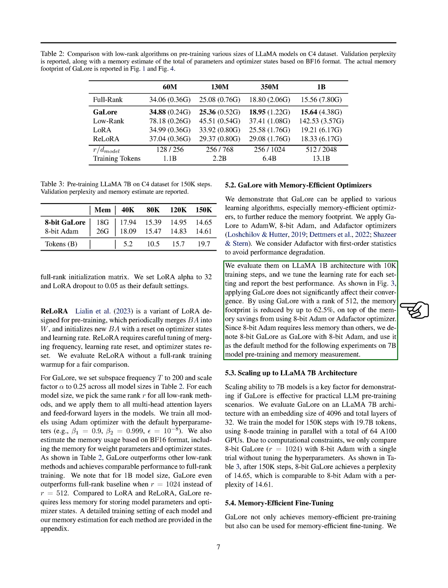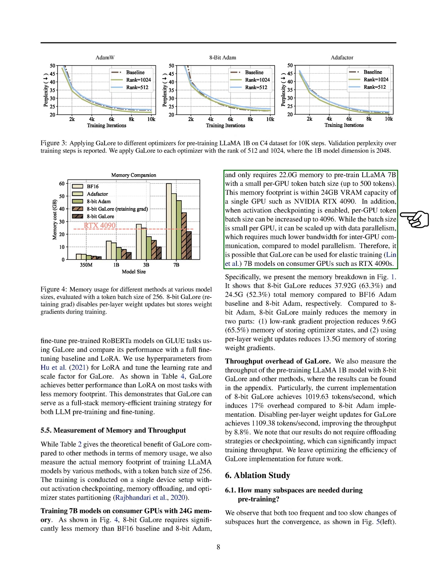Section: Measurement of Memory and Throughput. In this section, we compare the memory usage and throughput of different methods for training LLaMA models. We measured the actual memory usage of training LLaMA models using various methods with a token batch size of 256 on a single device setup without certain optimizations. When training 7B models on consumer GPUs with 24GB memory, we found that 8-bit GaLore requires less memory compared to other methods, needing only 22.0GB to pre-train LLaMA 7B with a small token batch size. This memory usage fits within the 24GB VRAM capacity of a single GPU like NVIDIA RTX 4090. By enabling activation checkpointing, the token batch size per GPU can be increased up to 4096, allowing for scalability with data parallelism.